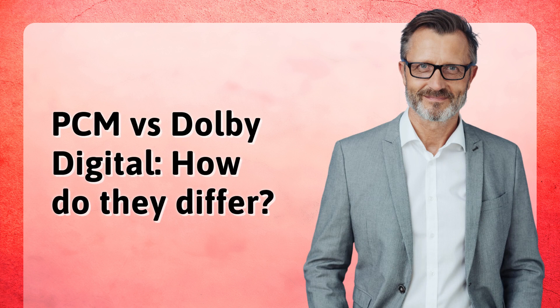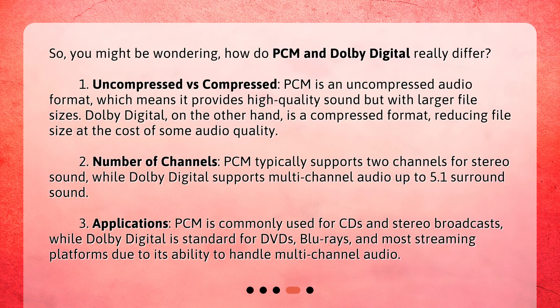PCM vs. Dolby Digital — how do they differ? 1. Uncompressed vs. Compressed: PCM is an uncompressed audio format, which means it provides high-quality sound but with larger file sizes. Dolby Digital, on the other hand, is a compressed format, reducing file size at the cost of some audio quality. 2. Number of Channels: PCM typically supports two channels for stereo sound, while Dolby Digital supports multi-channel audio up to 5.1 surround sound. 3. Applications: PCM is commonly used for CDs and stereo broadcasts, while Dolby Digital is standard for DVDs, Blu-rays, and most streaming platforms due to its ability to handle multi-channel audio.